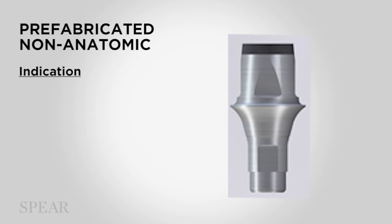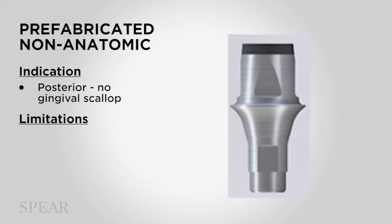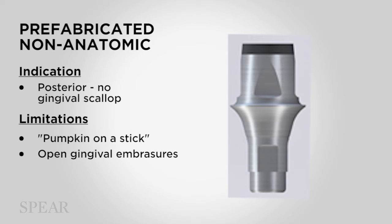When would we want to use an abutment like this? You'd have to use it in the posterior because there's no gingival scallop, so we wouldn't have control over where that gingival margin is in the anterior. This type of stock abutment comes with limitations. The first is the discrepancy in diameter between the crown form and the implant abutment, which can create the so-called pumpkin on a stick. We've also got a problem with gingival embrasures because we don't really have any way to customize this abutment.